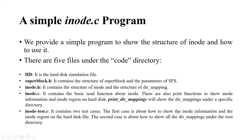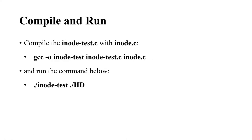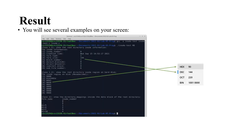The first test case shows how to use the inode information and the inode region on the hard disk file. The second test case shows how to display the directory mappings on the root directory. You can download and compile it using GCC with the files inode_test.c and inode.c to get the inode_test runnable file, then run it using the hard disk simulation file as the parameter.